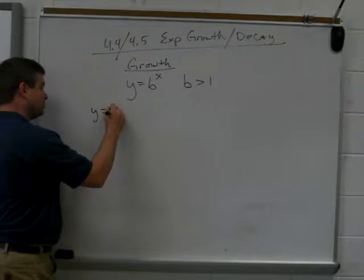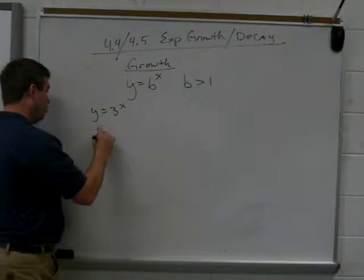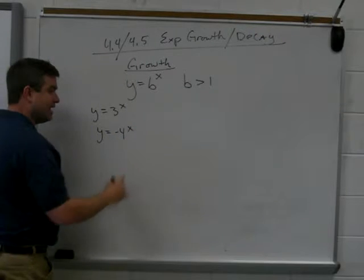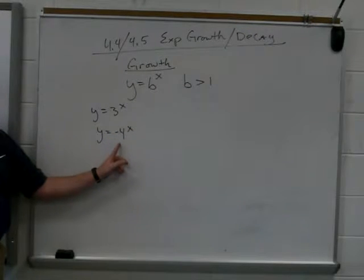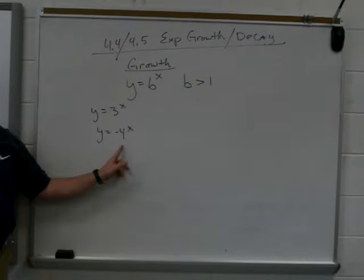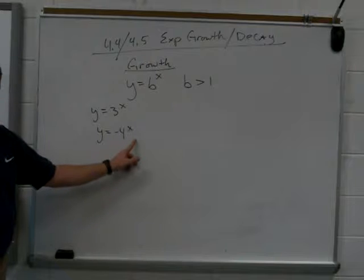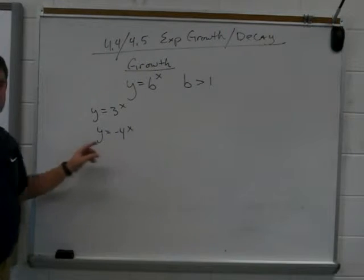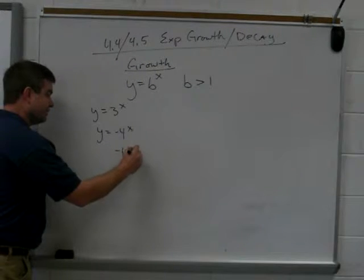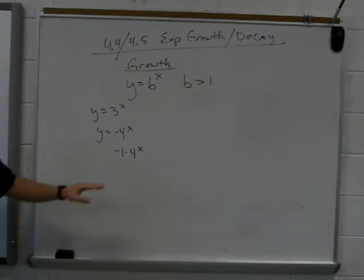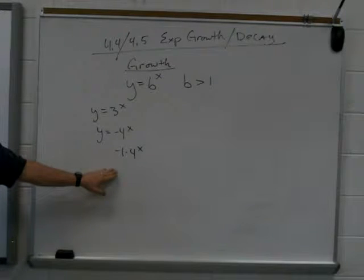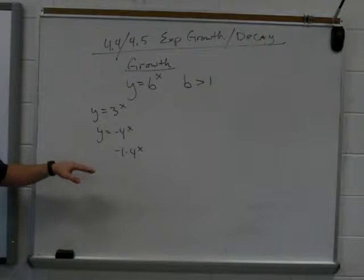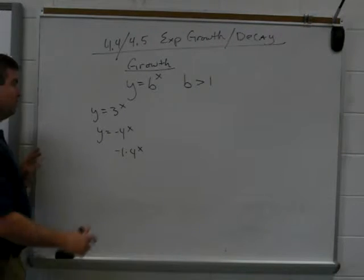Examples would be Y equals 3 to the X, or Y equals negative 4 to the X. You might say negative 4 is not greater than 1. But what is this really? What is negative 4 to the X really? Negative 1 times 4 to the X. Very good. Negative 1 times 4 to the X. So this is still growth. Okay, it can be positive or negative. But as long as B is greater than 1.